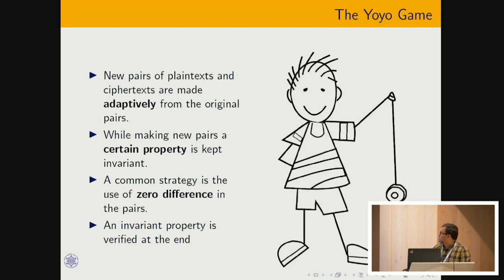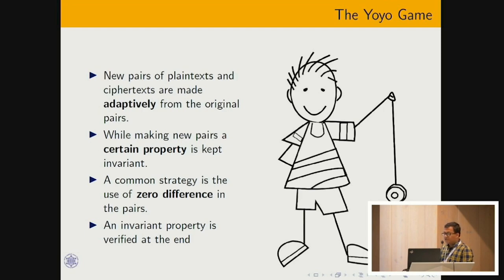The yoyo game works by choosing new pairs of plaintexts and ciphertexts adaptively. While making these new pairs, a certain property is kept invariant, and at the end of the game we verify whether that property is satisfied.